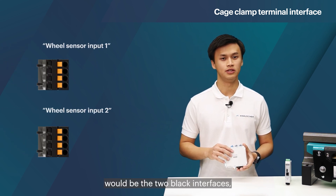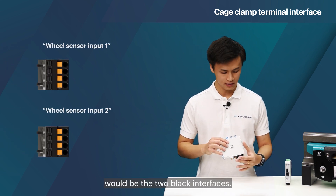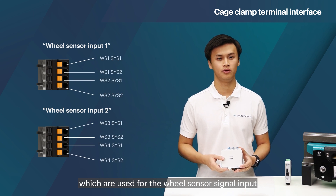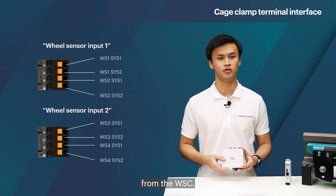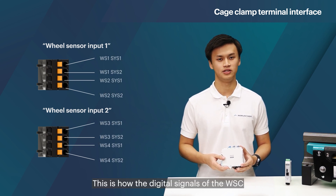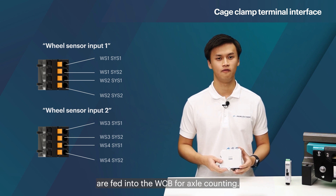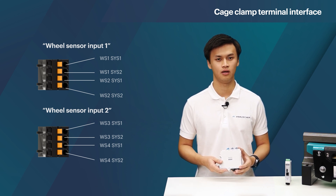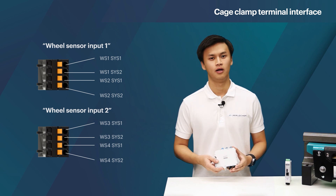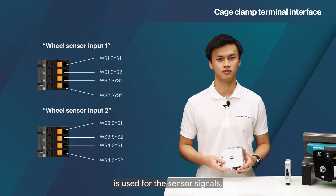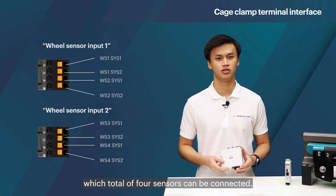After that would be the two black interfaces, which are used for the real sensor signal input from the WSC. This is how the digital signals of the WSC are fed into the WCB for axle counting. Two pins each from the black connector are used for the sensor signals, so a total of four sensors can be connected.